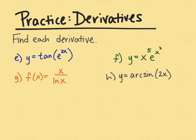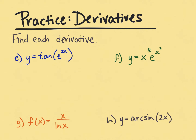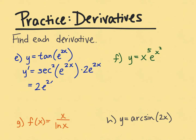In part e, we want to find the derivative of the tangent of e to the 2x. This is definitely a chain rule problem. The rule for tangent is that its derivative is secant squared, so we get secant squared of e to the 2x. Using the chain rule, we multiply by the derivative of e to the 2x, which is 2e to the 2x. Writing this nicely: 2e to the 2x secant squared of e to the 2x.